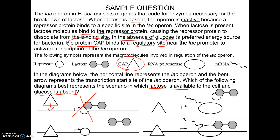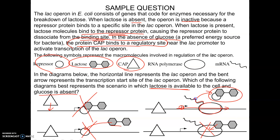The correct answer shows lactose bound to the repressor, which has been removed from the binding site, and polymerase sliding down the operon making an mRNA. You really don't have to know all the parts — you need to read the scenario and match up which picture fits their explanation of how the operon works. They can give you an operon you've heard of before or a brand new one, but if you can read the scenario and understand the vocabulary, you should be able to match up the pictures.